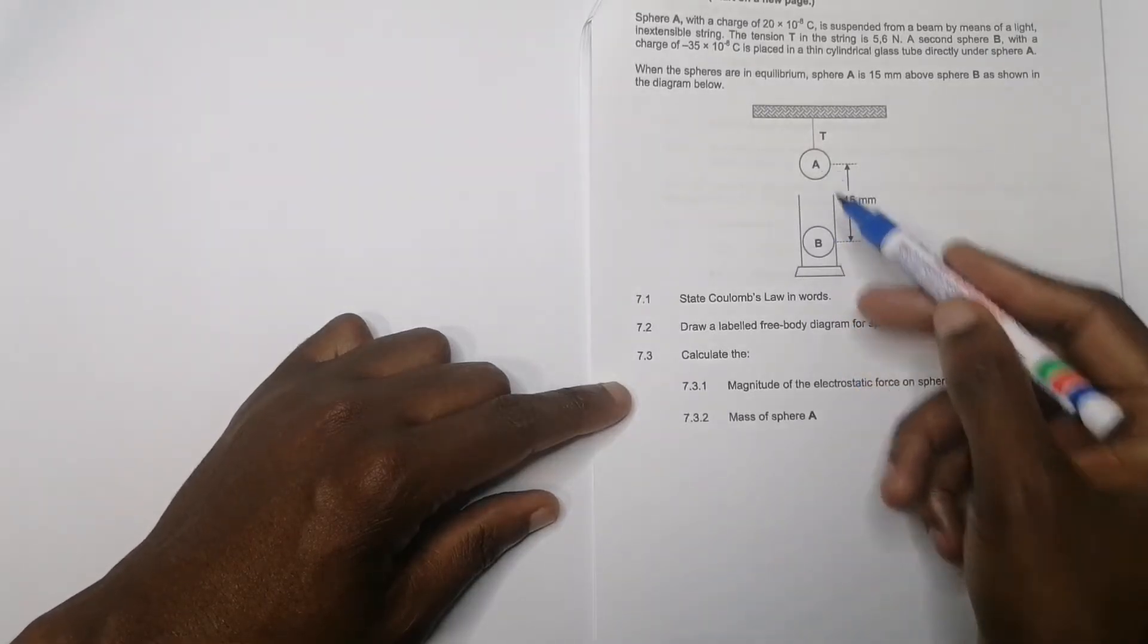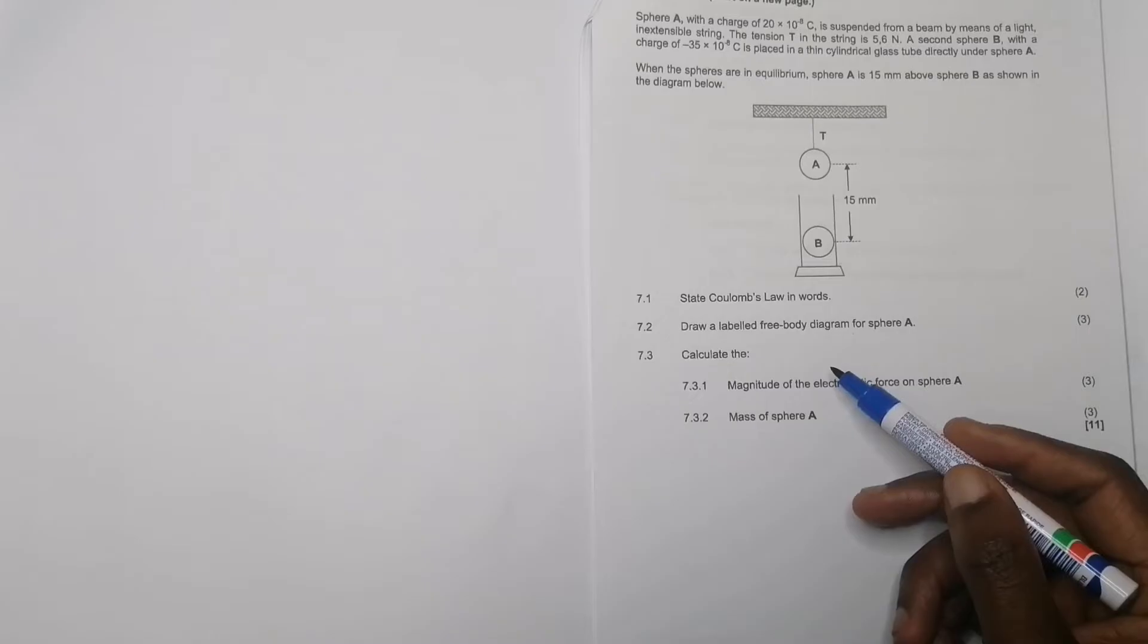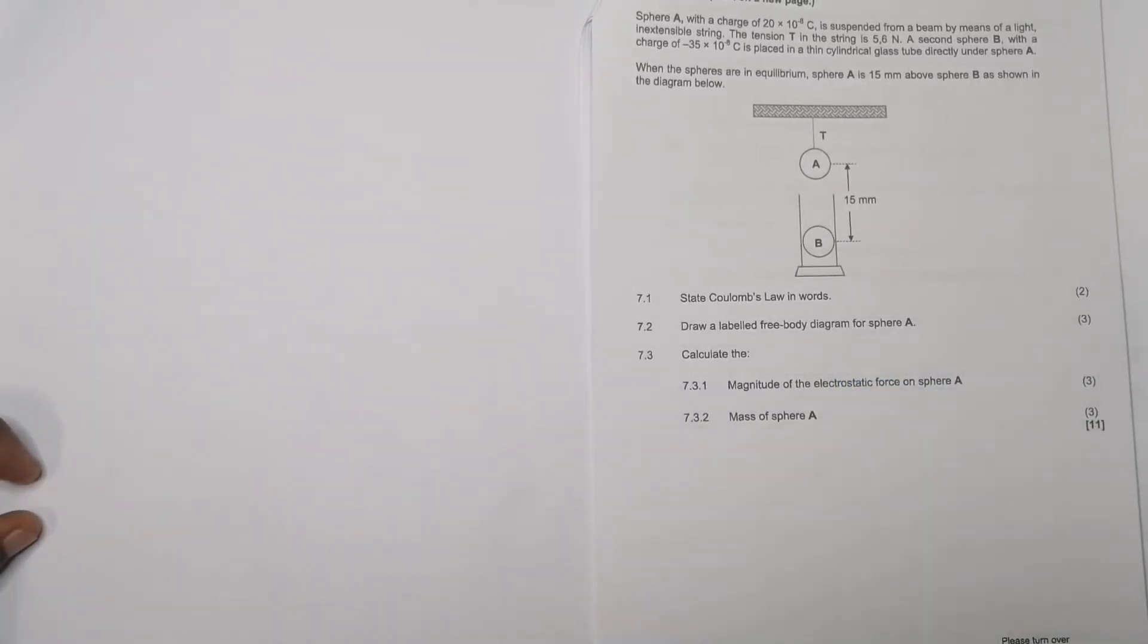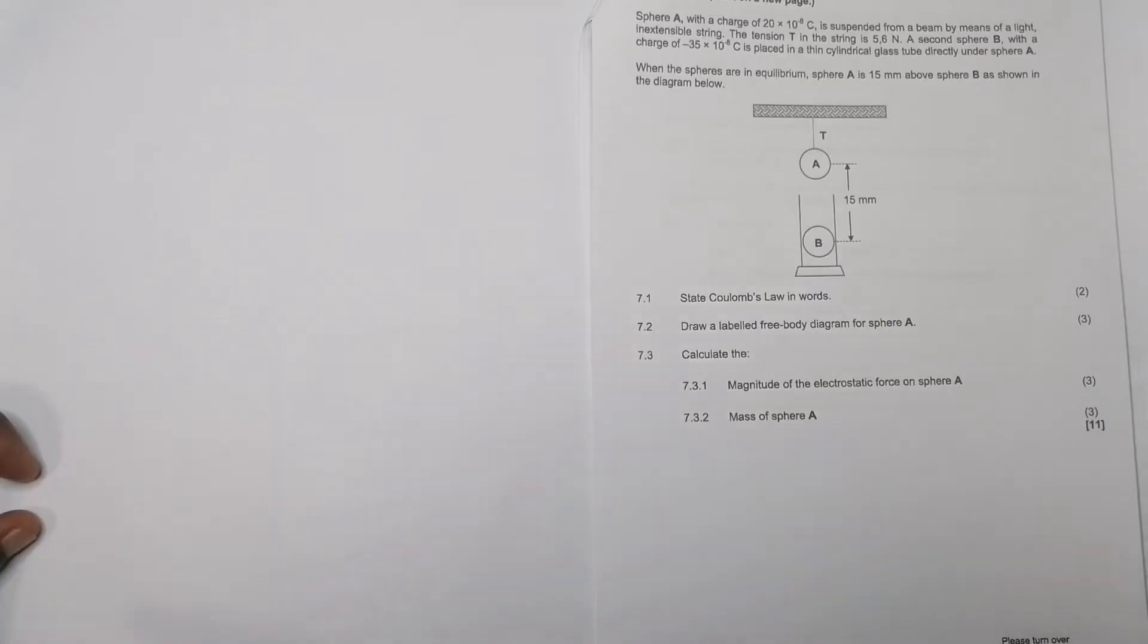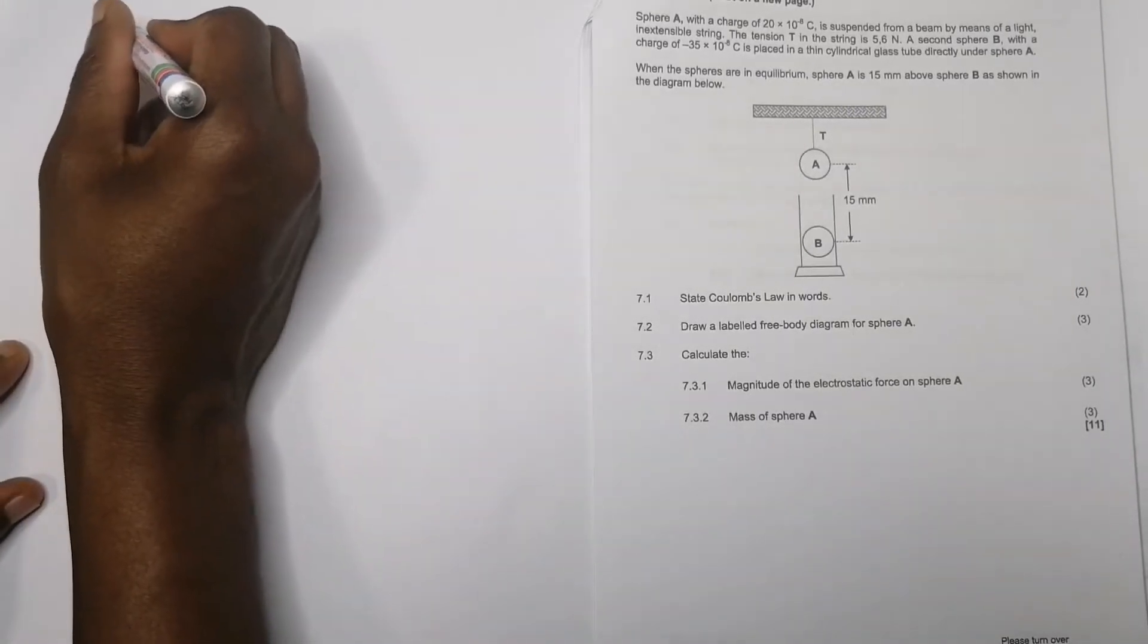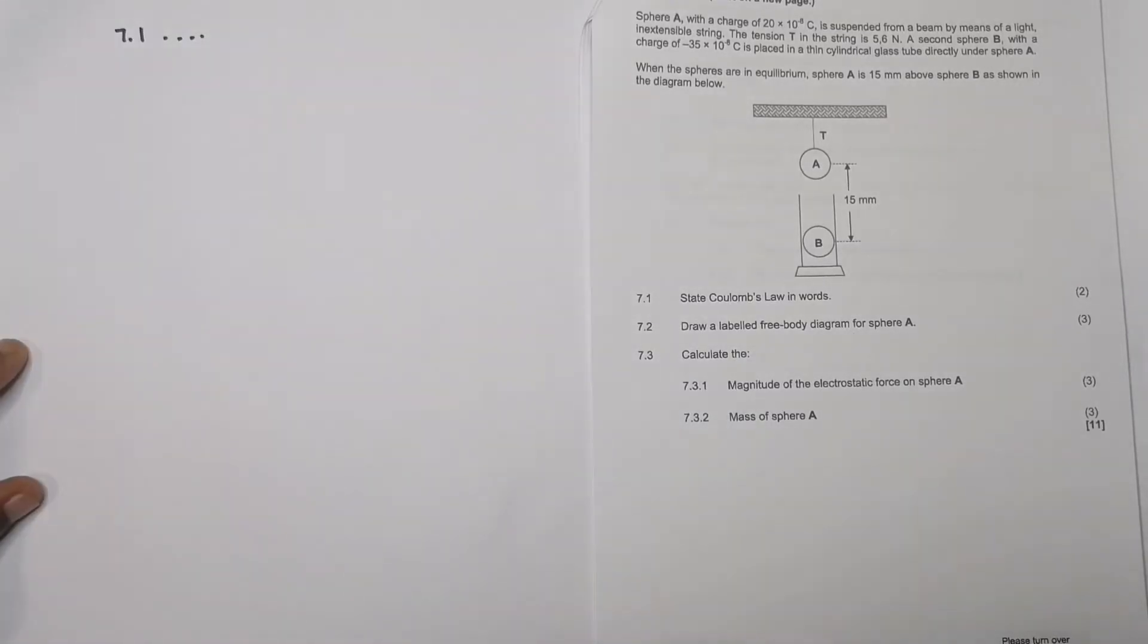First they say state Coulomb's law in words. I'm not going to write that down; I'm sure by now you should know how to state Coulomb's law. The electrostatic force between two charged particles is directly proportional to the magnitude of the charges and inversely proportional to the square of their distance apart.